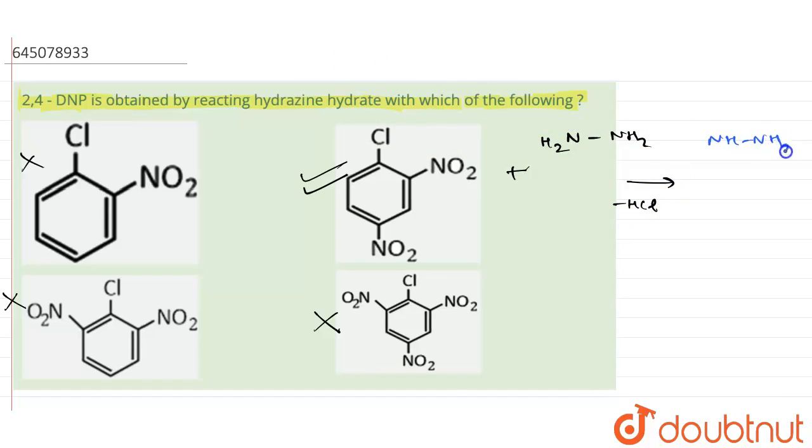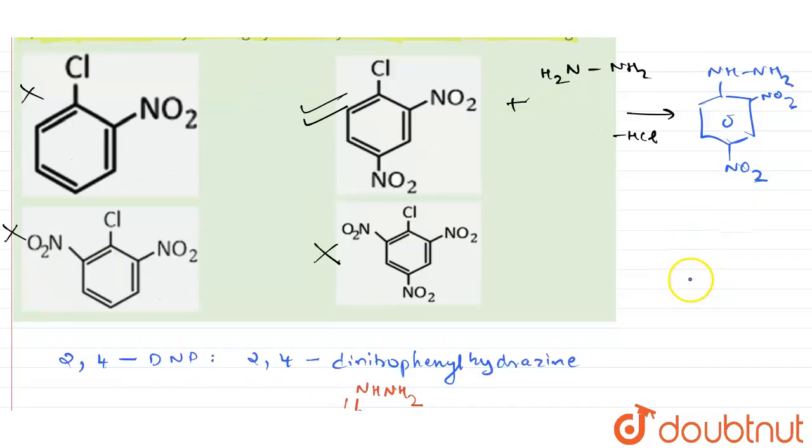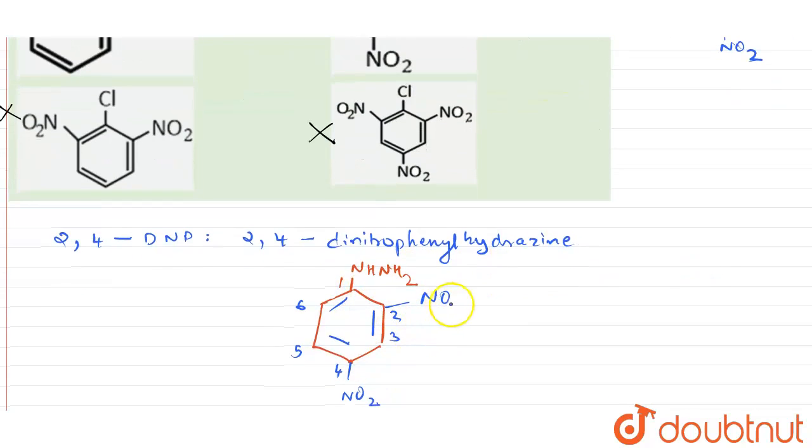At this position I will have nitro group present as it is and this position nitro group as it is. So this is the 2,4-dinitrophenyl hydrazine molecule. If you see the structure, it is NH-NH2, NO2, this is NO2 and NO2. So this is the correct answer which we have got.